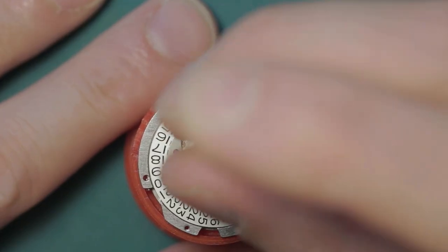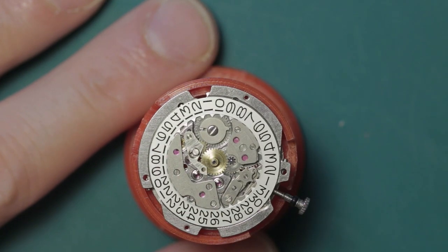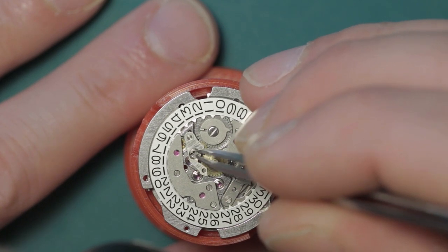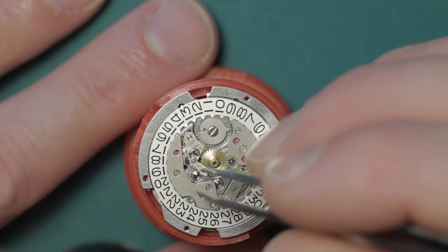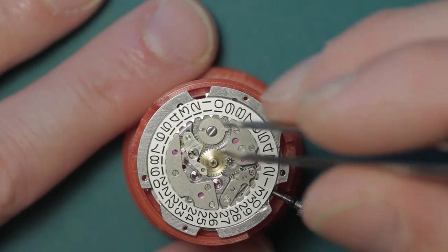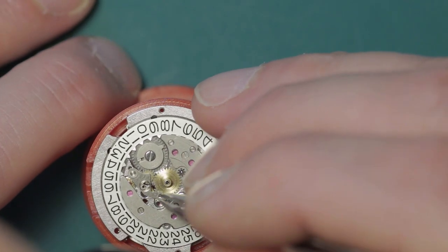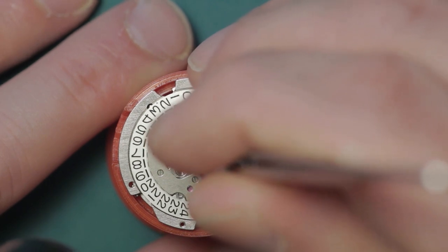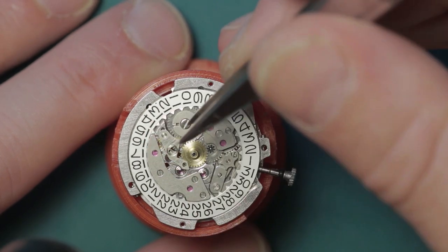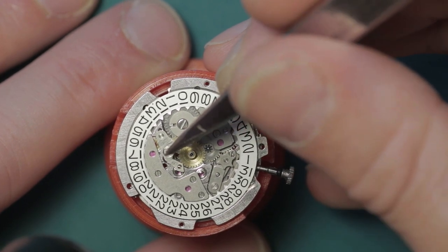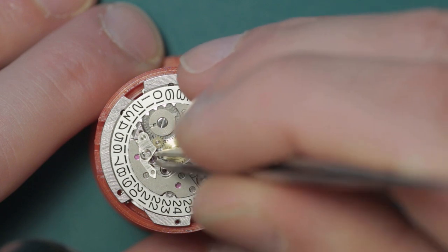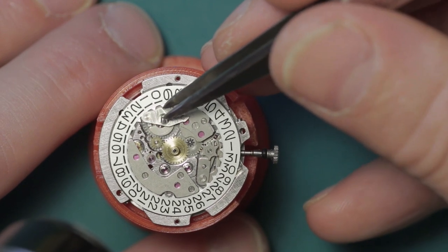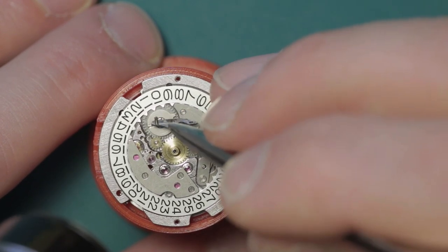Day wheel jump spring, which is retained by a single screw, which is shouldered, hopefully you can see that. This should then just lift clear off the pivot I am assuming. Okay, it does indeed lift clear, but the pivot is built into the jump spring itself. If I can lift that off and show you - it's just dropped back in, typical when you want them to do that they won't. There we go.